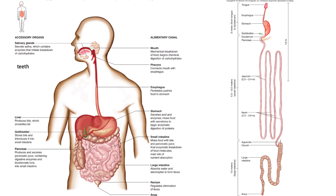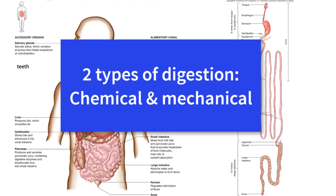Starting at the oral cavity, accessory organs such as teeth and salivary glands help us start with our food digestion. There are really two types of digestion: chemical digestion and mechanical digestion. Mechanical digestion is just tearing apart large chunks of something to make smaller chunks of the same thing. For example, if you had a ball of Play-Doh, you can rip it apart and make ten little balls of Play-Doh — you haven't chemically changed it in any way. That's what mechanical digestion is.